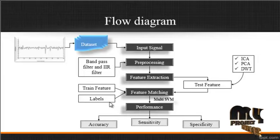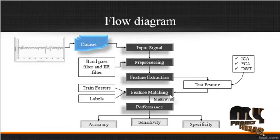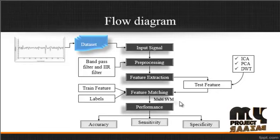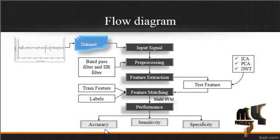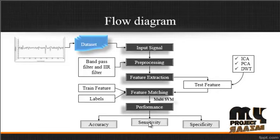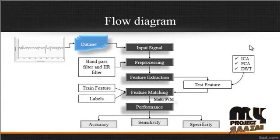After feature matching, performance is evaluated. The multi-SVM provides matched feature classification. Performance is then evaluated using three parameters: accuracy, sensitivity, and specificity. These three parameters allow us to justify whether our process is efficient or not.